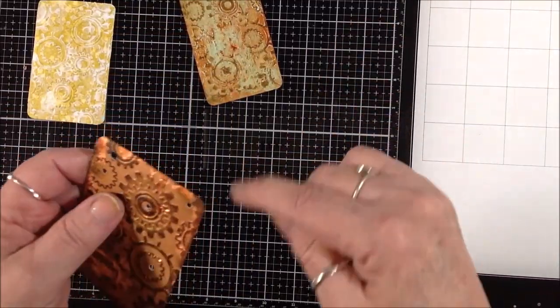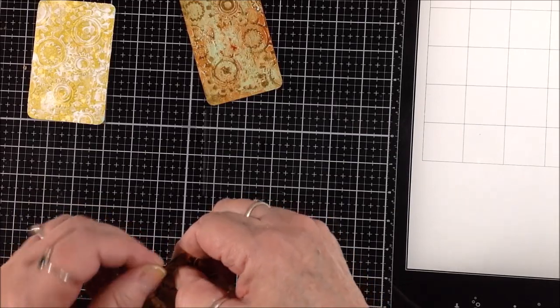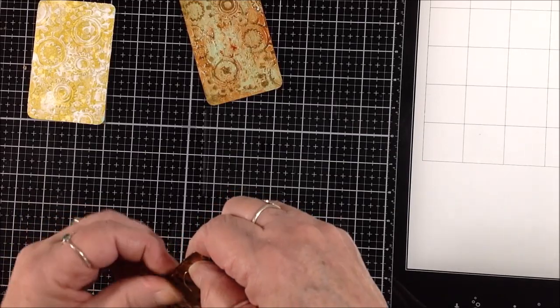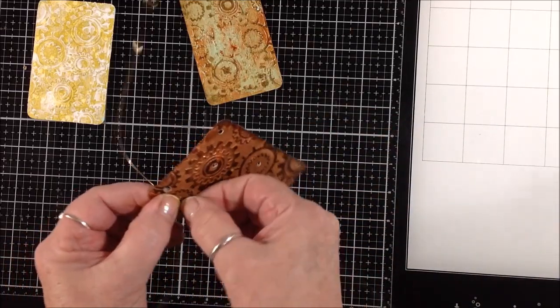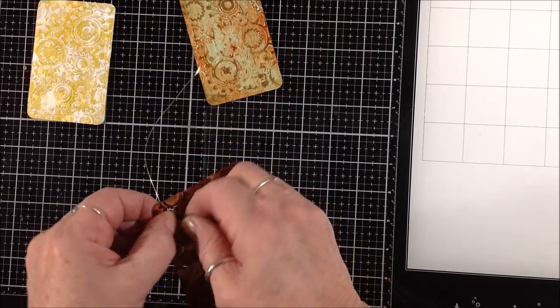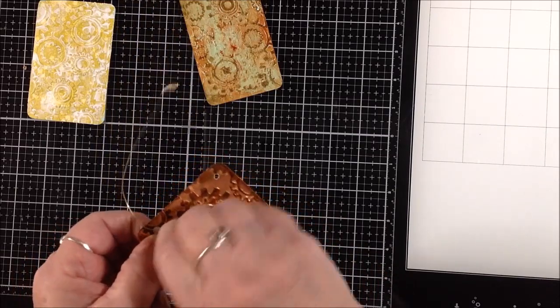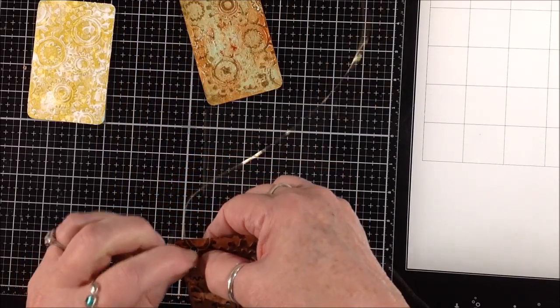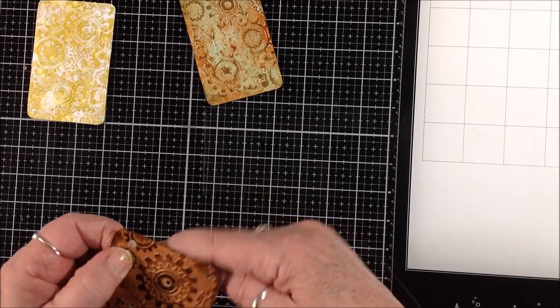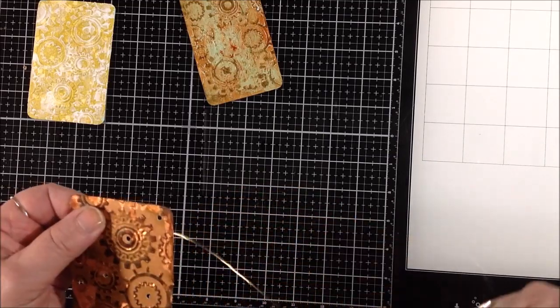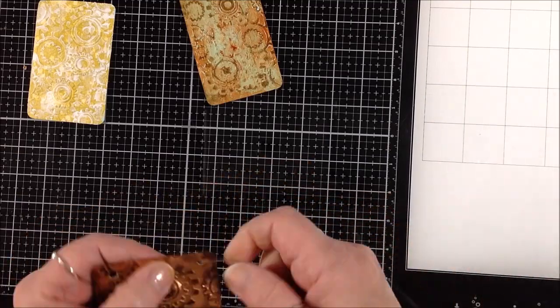I got my Crop-A-Dile out to put the eyelets in and got this bright idea that I would thread some thin copper wire here and there through that copper card. I just took the small punch end of my Crop-A-Dile and punched holes in the center of most of those gears and just started messing around with the wire, twisting it and turning it and threading it back and forth through the holes. It kind of reminds me of a circuit board or something like that.